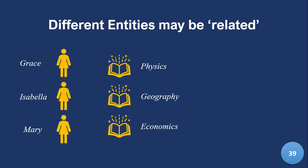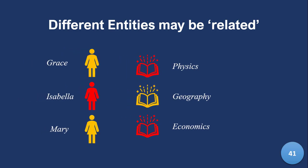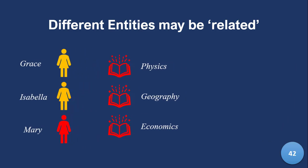Just to explain a bit more about many-to-many: we may have Grace read physics and geography textbooks — that's one-to-many. Isabella is reading physics and economics. Mary is reading all three: physics, geography, and economics. So it's a many-to-many relationship because it's a combination of many one-to-many's in many formats. One book can be read by many people, or one student can read many books.